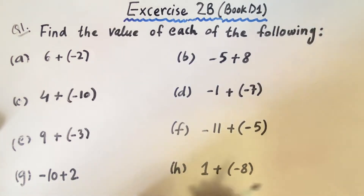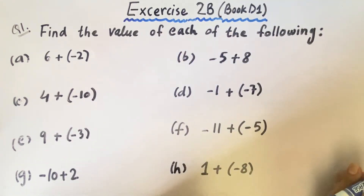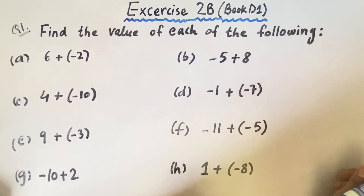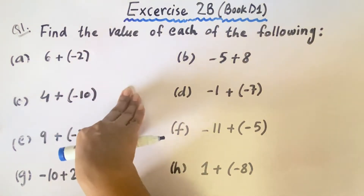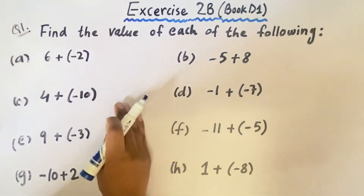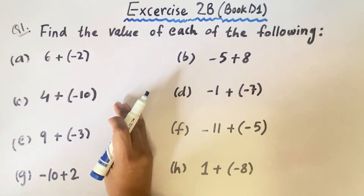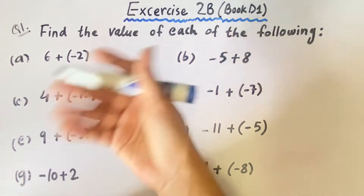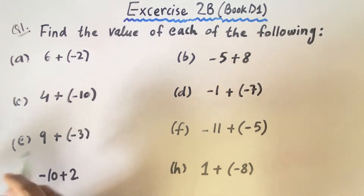So let's get started. In question number 1, we are asked to find the value of each of the following. In all these 8 parts, two types of numbers are written along with their negative and positive signs and we need to calculate them and write the answer, write the value. Always remember in this type of question, we need to think about 2 things: first, should the answer be positive or negative, and the other is should we find the sum or difference of the values of the 2 numbers.